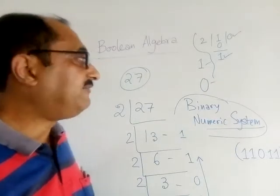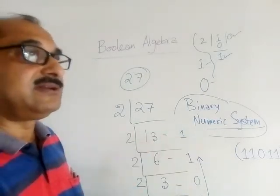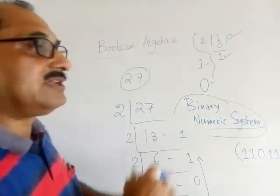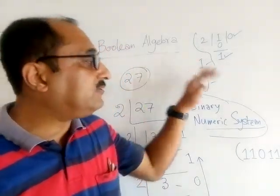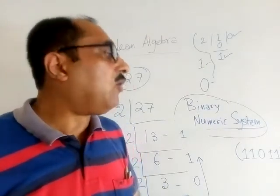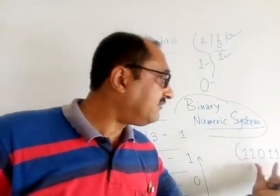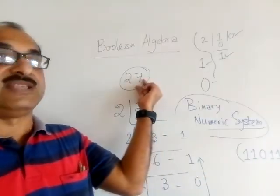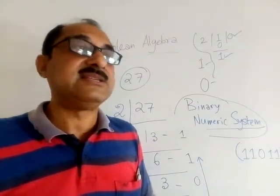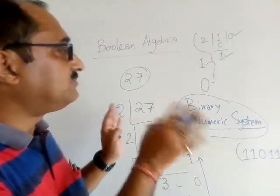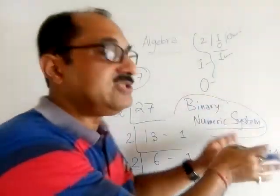So every number that is present in our decimal numeric system, that is possible for us to form in our decimal numeric system, can be converted into binary numeric system, or other way round. I can convert this also to 27. But that is not what we want to discuss here. I just wanted to show that it is possible to have a number expressed in this numeric system.